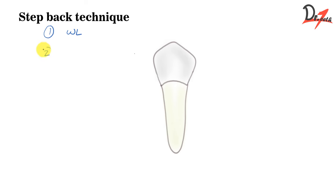Then what we do, we take number 10 file. Let us suppose this is the file number 10 and then we go all the way till the working length. Let us suppose the working length is 20 mm. So we'll take the number 10 file and go all the way till the working length and let me draw a canal here so that it gets easier to visualize.